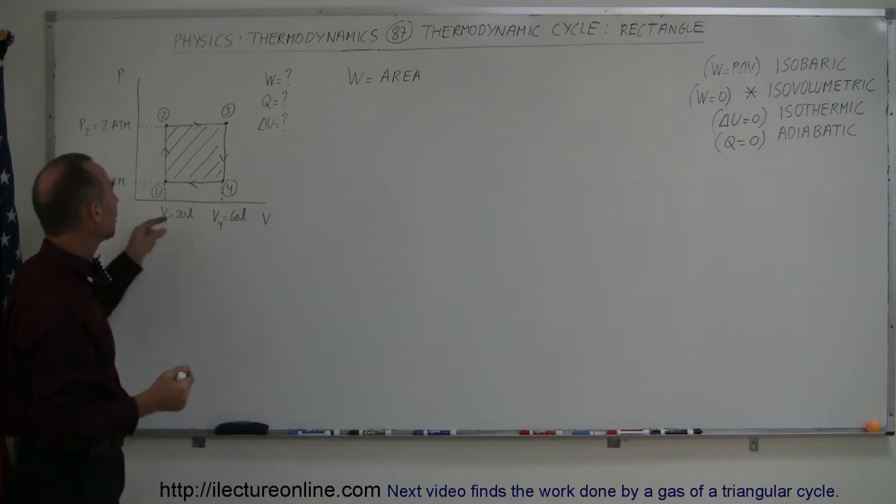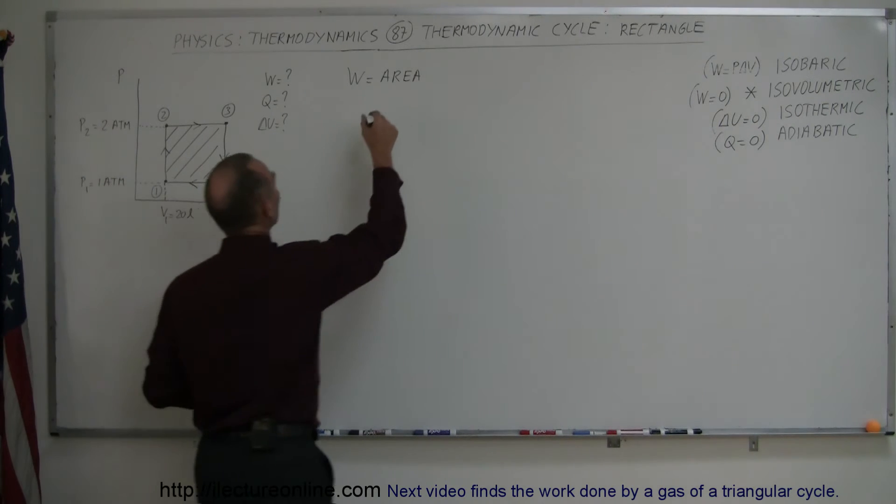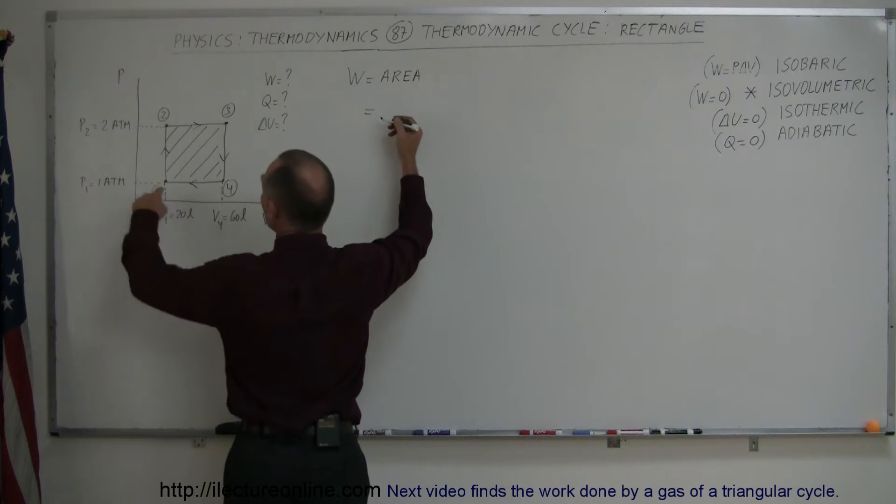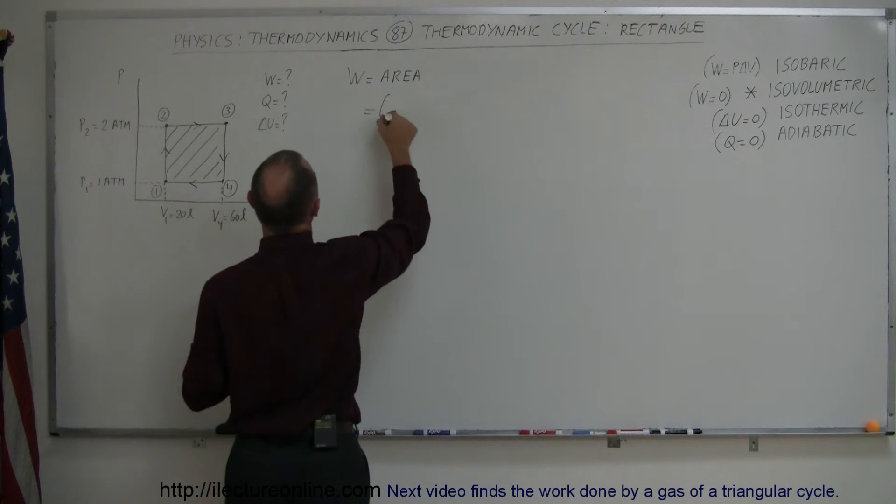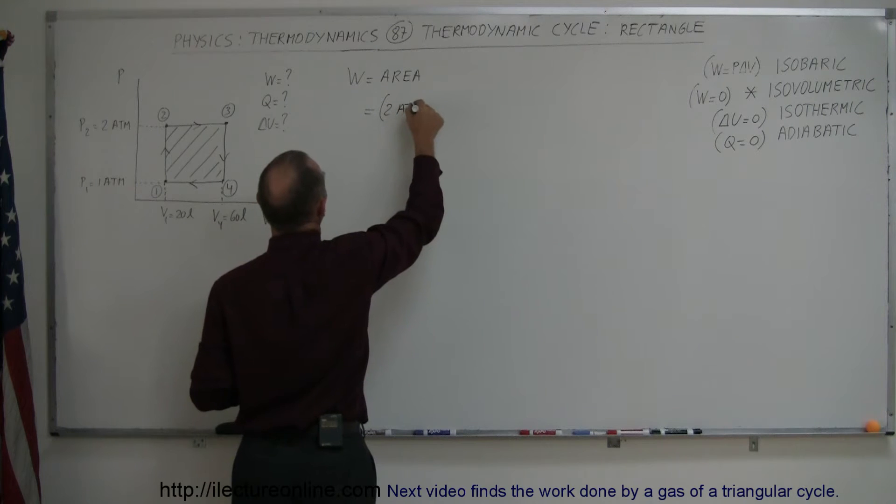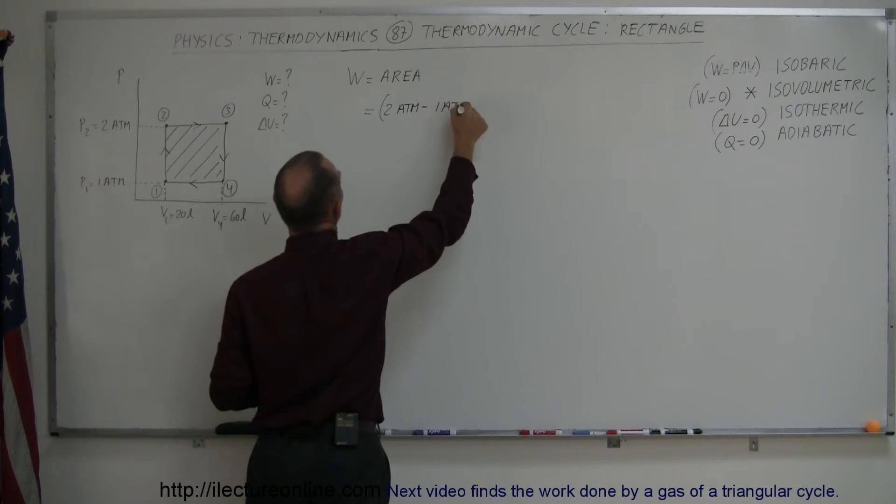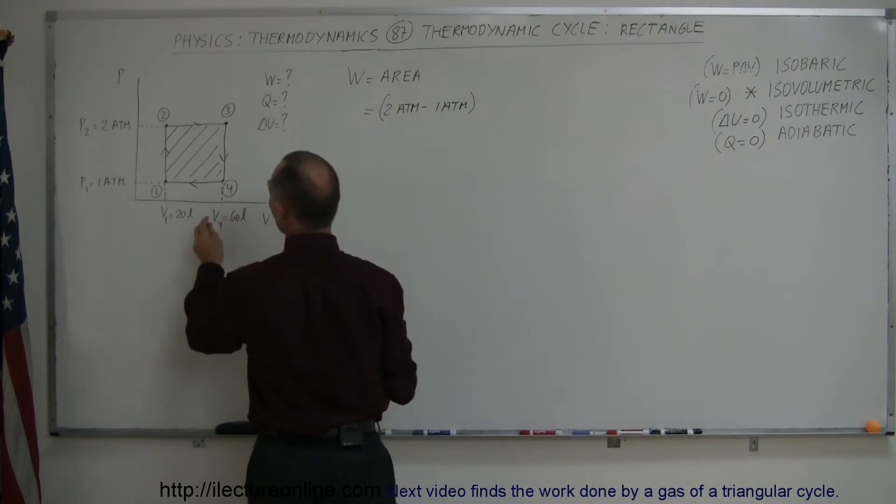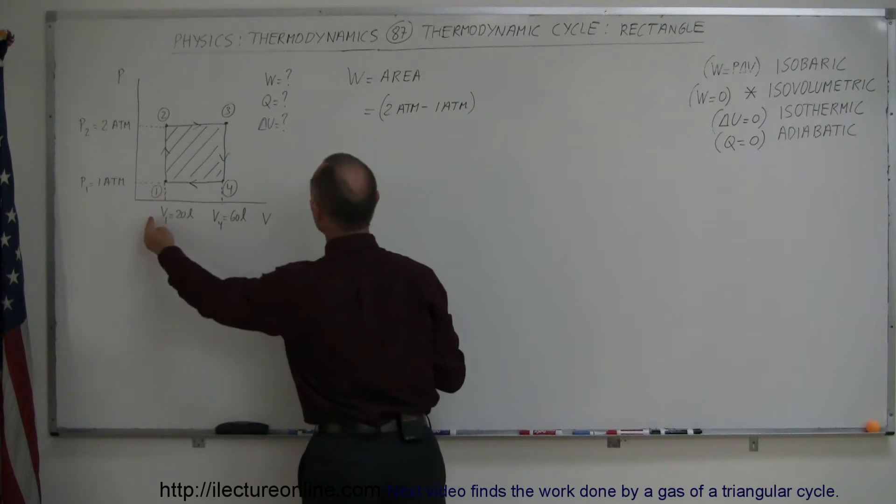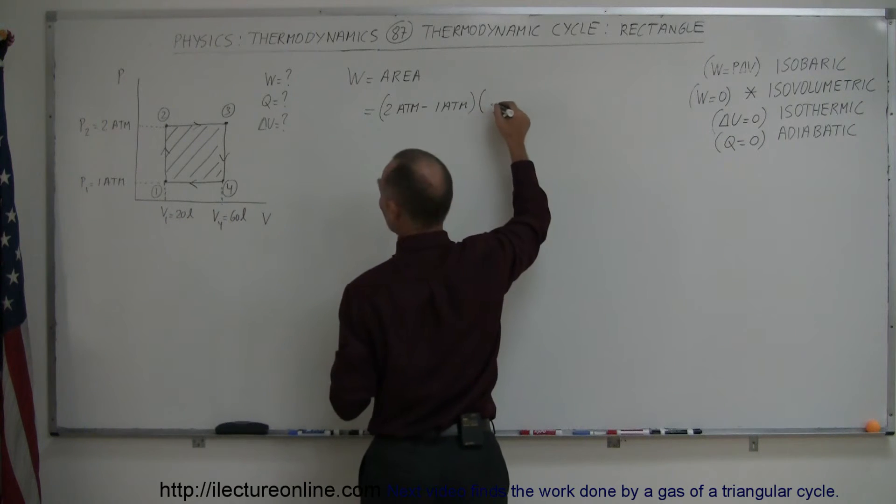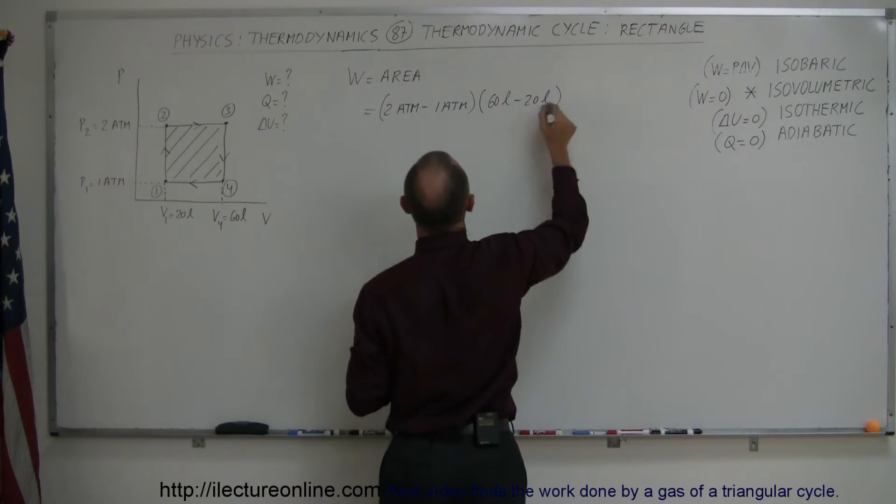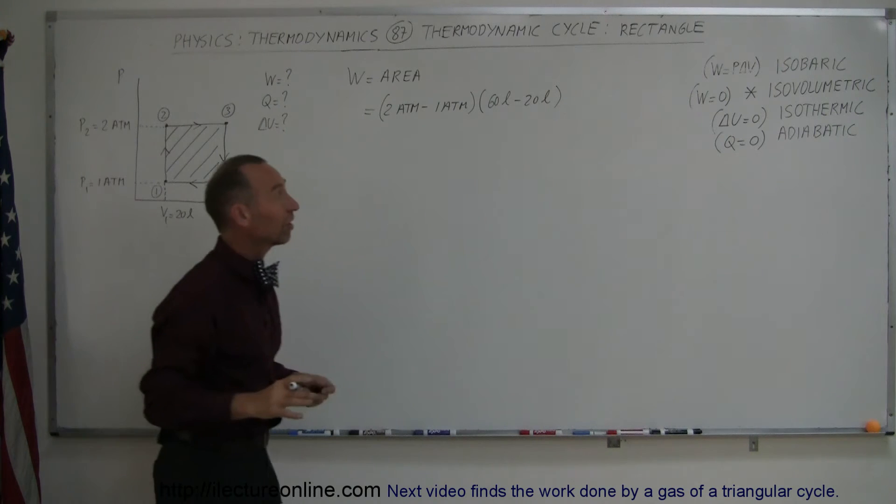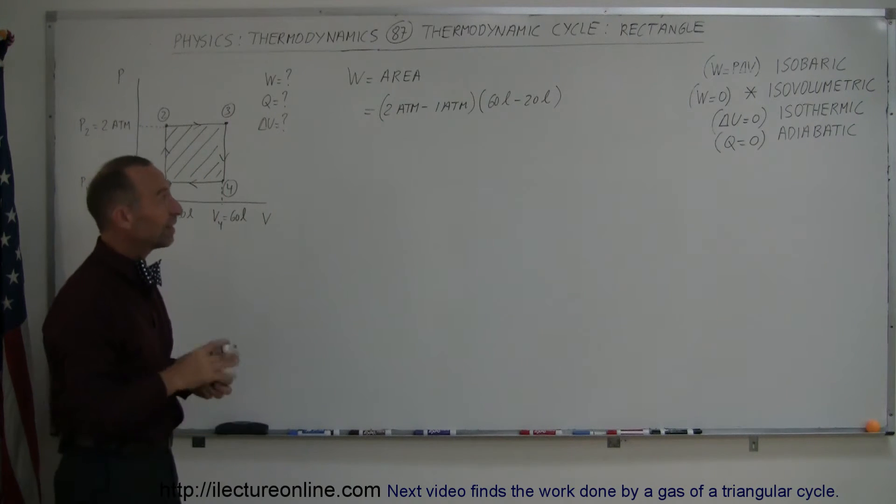Alright, so the area is equal to the height times the width. And so the height would be equal to the difference between two atmospheres and one atmosphere. So it would be 2 atmospheres minus 1 atmosphere. And the width of the rectangle would be the difference between the volume here and the volume there. So you multiply that times 60 liters minus 20 liters and that will give you the work done. Now obviously, we still have atmospheres and liters there.